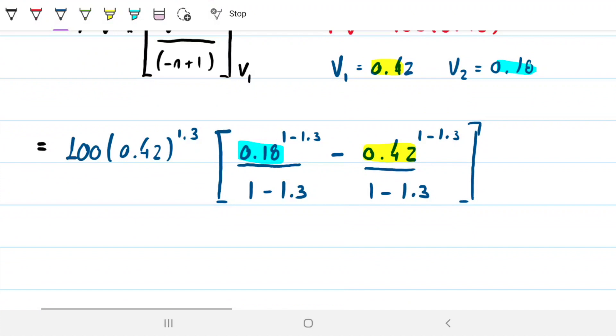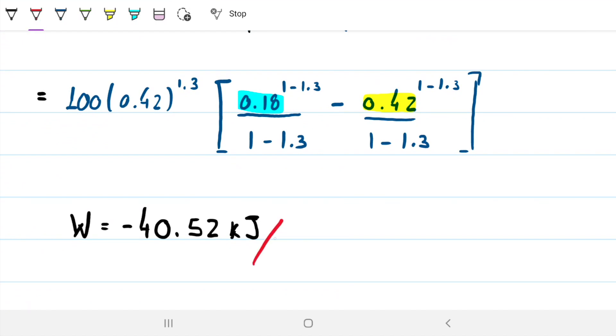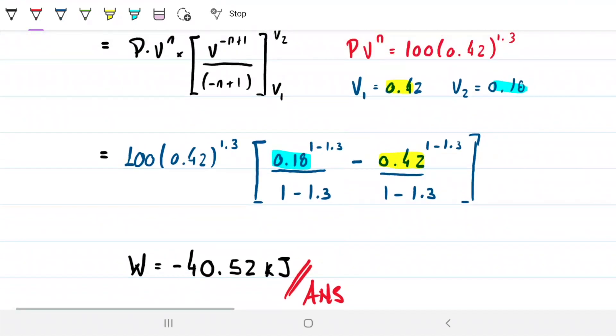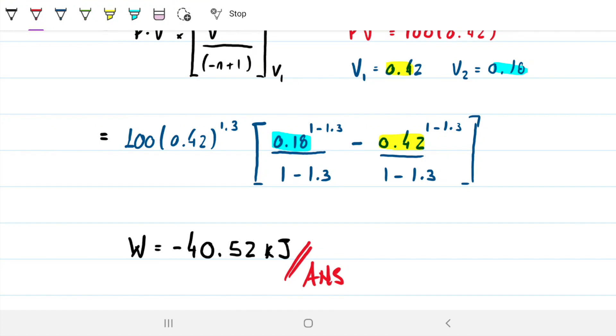Plug all in, we get that W = -40.52 kJ. Obviously it's negative because the gas is not expanding, it's contracting. So it releases energy as it does so. It doesn't need to absorb energy, it releases energy. So it releases about 40 kJ as it's been compressed from 0.42 to 0.18 m³. Brilliant.